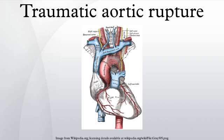Traumatic aortic rupture is a common killer of victims of automotive accidents and other traumas, with up to 18% of deaths that occur in automobile collisions being related to the injury. In fact, aortic disruption due to blunt chest trauma is the second leading cause of injury death behind traumatic brain injury. Aortic rupture can also be caused by non-traumatic mechanisms, particularly abdominal aortic aneurysm rupture.